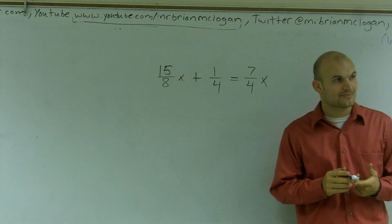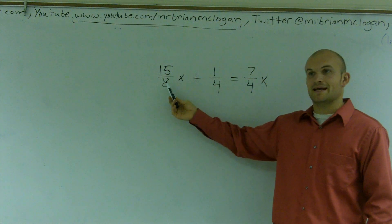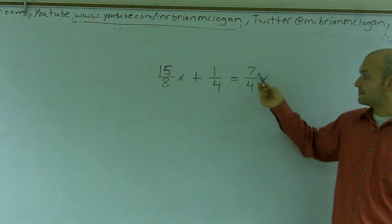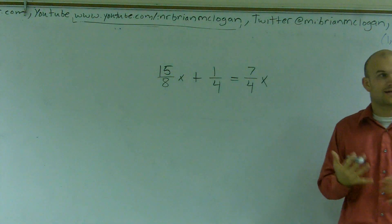So the first thing I like to always do is get rid of all of my fractions. And remember, all a fraction is is division, right? That's all a fraction is. So what I'm saying is I'm dividing by eight, I'm dividing by four, and I'm dividing by four over here. So to undo division, we can multiply.